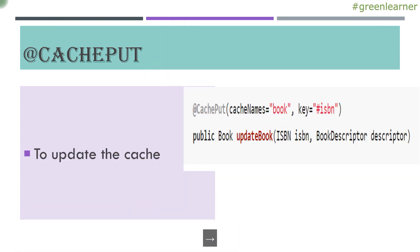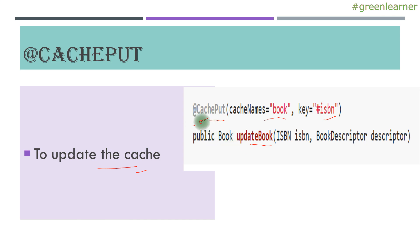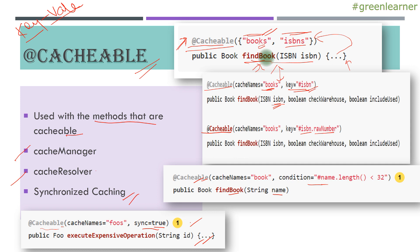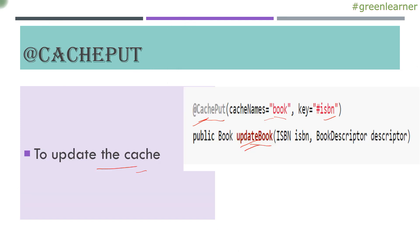Moving ahead to the next annotation: @CachePut. @Cacheable was to add the information, and @CachePut is there to update the information. When you are going to update a book, you can use @CachePut with the same cache name and key. It will call the update method and then go to the cache and update the information. One key difference: with @Cacheable, the underlying method only executes when the information is not in cache. With @CachePut, it always executes and then updates the information in the cache.